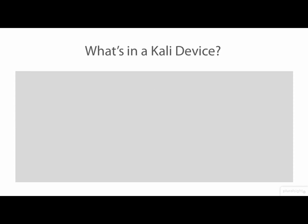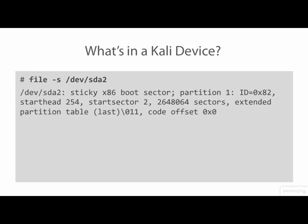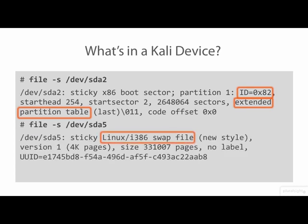Now let's have a look at the SDA1 device using the file command. This is the first partition on my virtual hard drive. We see that it contains the Linux ext4 file system containing extents, which are groups of contiguous storage blocks that make storing very large and huge files more efficient. The SDA2 device is the second partition of my virtual drive. It is the extended disk partition and is type 82 hex, which means it contains a Linux swap partition. And the device SDA5 is the actual Linux swap partition file system. So we see that the Linux file command is a good way to determine what a device file in dev is. To get a more detailed report of Linux block devices, we use the fdisk command.